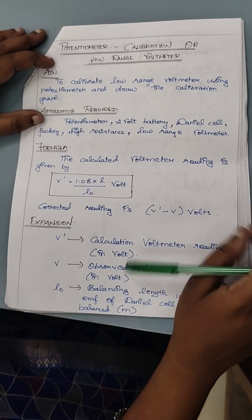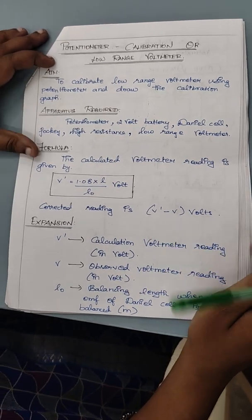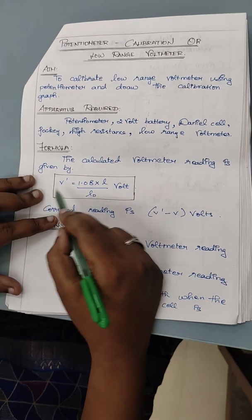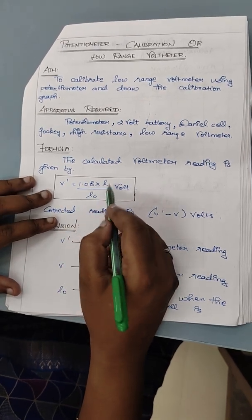Now we are going to see about the calculation of potentiometer, calculation of flow rate in the voltmeter. We know the formula B' is equal to 1.08 into L by L0.